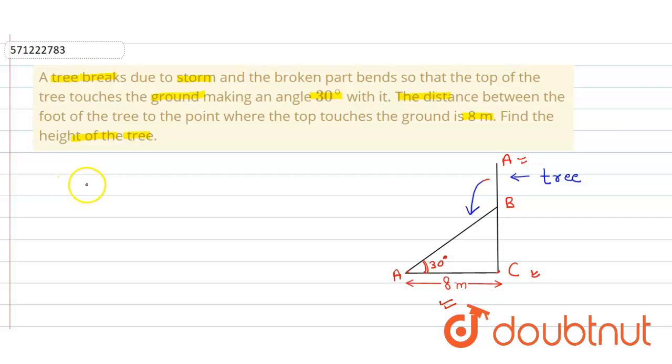We apply the trigonometric functions. First, we apply tan 30 degrees, which is equal to perpendicular upon base. So the perpendicular is BC upon base AC.